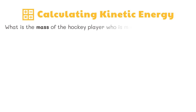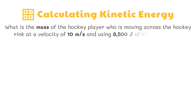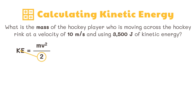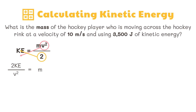Here is another sample problem. What is the mass of the hockey player who is moving across the hockey rink at a velocity of 10 meters per second and using 3,500 joules of kinetic energy? The formula we use is: kinetic energy equals mass times velocity squared divided by 2. Let's derive the formula to get the mass. We multiply both sides by 2 and divide both sides by velocity squared to get the mass. The derived formula is: mass equals 2 multiplied by kinetic energy divided by velocity squared.